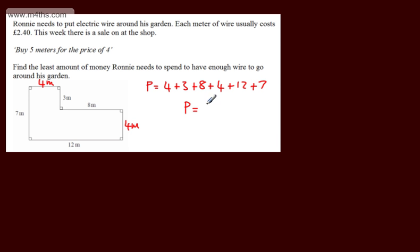So the perimeter is 38 meters. The ideal scenario is that we buy as many multiples of 5 meters as possible.